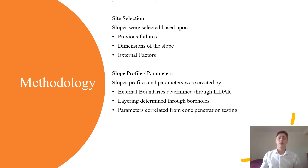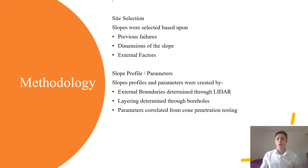The soil profile and parameters were then established. The external boundaries were determined through the use of LiDAR, which allowed for the extraction of contours using QGIS software. The layering was determined through the use of boreholes which had been previously completed at each of the locations, and the parameters were correlated from cone penetration testing. Both the boreholes and cone penetration testing were sourced from either previous investigations or through the New Zealand Geotechnical Database.